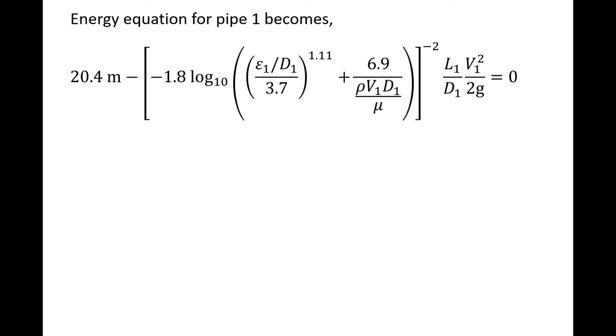We substitute the Darcy-Weisbach and Haaland equations into the energy equation and examine pipe 1. Note that the subscript i has been replaced by the number 1. The diameter, absolute roughness, and length of pipe 1 were already given. At 15 degrees Celsius, the density of water is 999 kilograms per cubic meter, and the absolute viscosity is 1.14 times 10 to the minus 3 newton seconds per meter squared. And the gravitational acceleration is 9.81 meters per second squared. This means the only unknown quantity in the equation is the speed v1. Unfortunately, it's too difficult to solve this equation for v1 through algebraic manipulation. So we have three options.